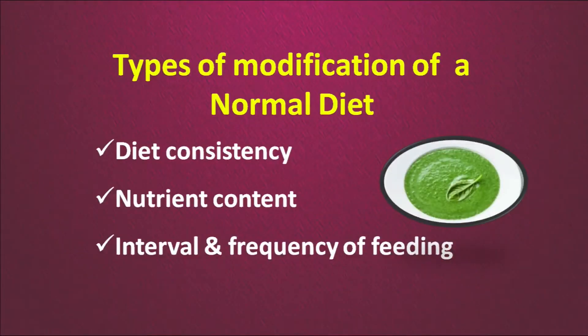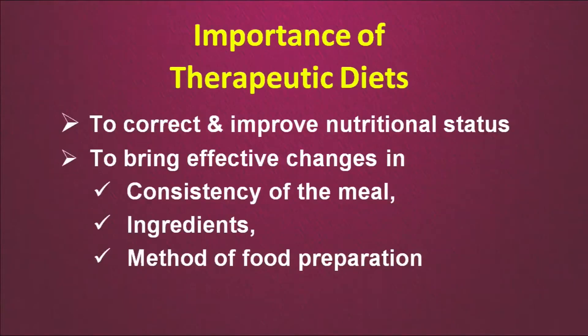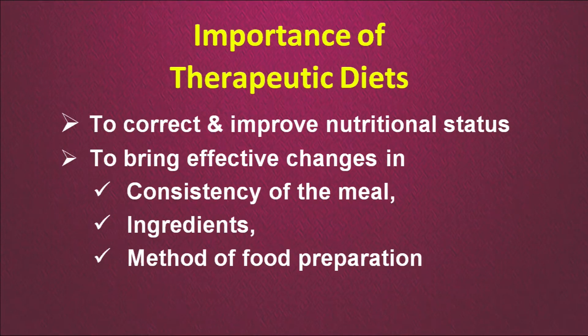How do we do it? There are types of modifications of a normal diet. We can change the diet consistency, we can alter the nutrient content, and we can change the pattern and frequency of eating — at what intervals different types of diet during different kinds of illnesses can be given. Therapeutic diets are given to correct and improve nutritional status, to bring changes in the consistency of the meal, ingredients used, and the method of food preparation.